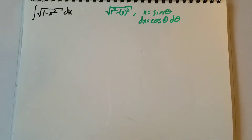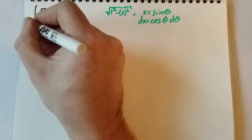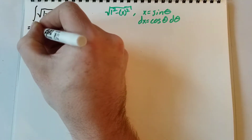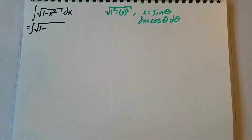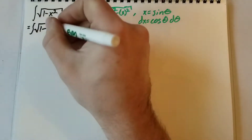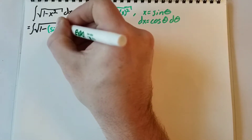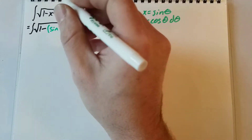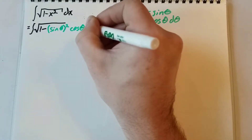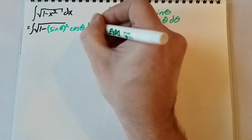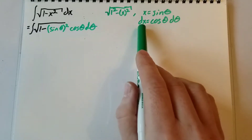Now we can take that information and rewrite our integral as the square root of 1 minus sine theta squared, times cosine theta d theta, because cosine theta d theta is dx.